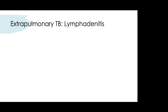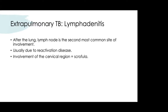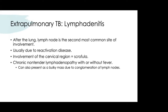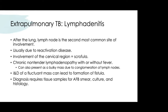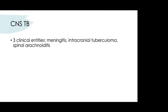Extrapulmonary TB lymphadenitis: after the lung, the lymph node is the second most common site, usually due to reactivation. Cervical involvement is called scrofula — presenting as chronic non-tender lymphadenopathy or a bulky conglomerated mass. Avoid incision and drainage as it can cause fistulas. Diagnosis requires tissue for AFB smear, culture, and histology. Consider fine needle aspiration first, followed by biopsy if needed.